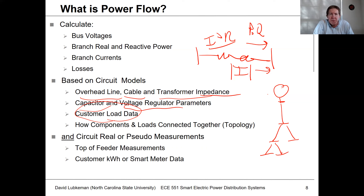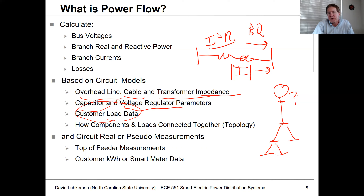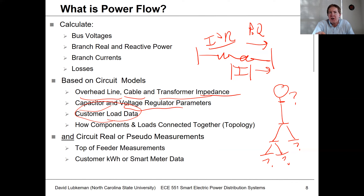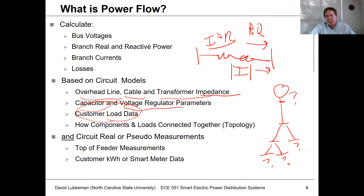Once we have all this information, the final piece is measurements. We need to know the top-of-feeder measurements, which we can get through a relay. We need some information about the loads, from various data sources such as kilowatt-hour billing information, transformer KVA sizes, or smart meter data for customer locations. Depending on what we have, we go through different types of data manipulation to come up with the load model.